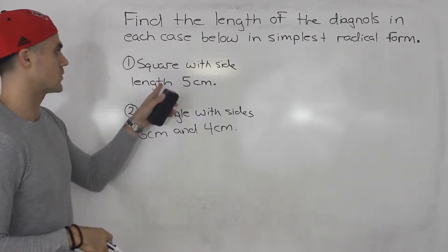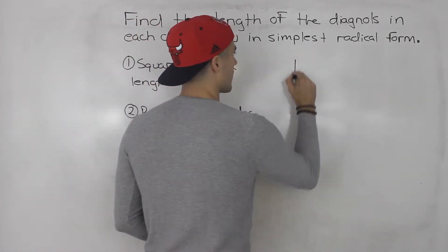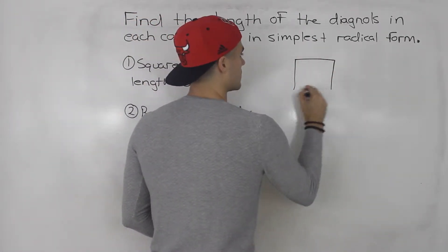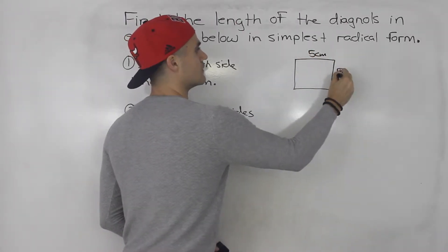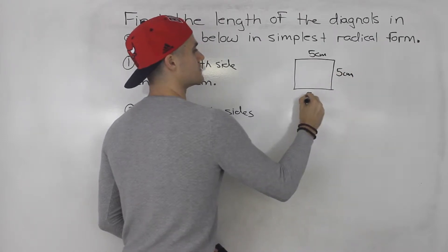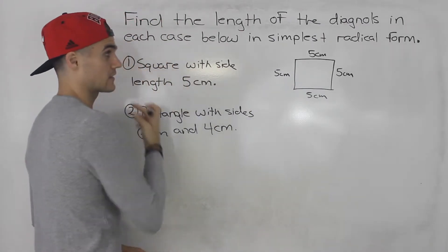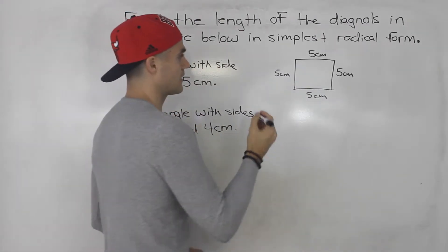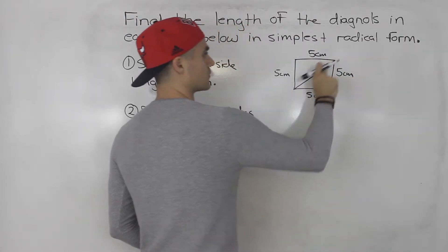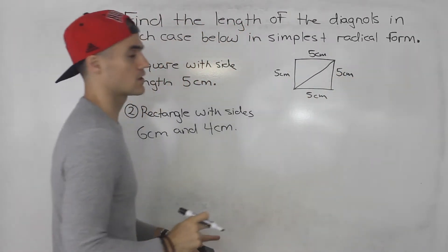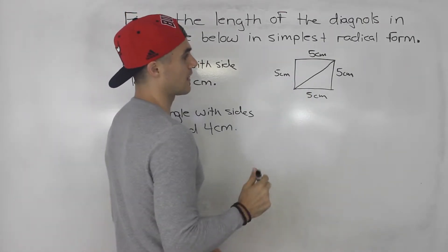Number one, we have a square that has a side length of five centimeters. So if we draw that, we have this square here. Each side is five centimeters. And we have to find the length of the diagonal. The diagonal is the line that goes through the quadrilateral like that. How do we do that?